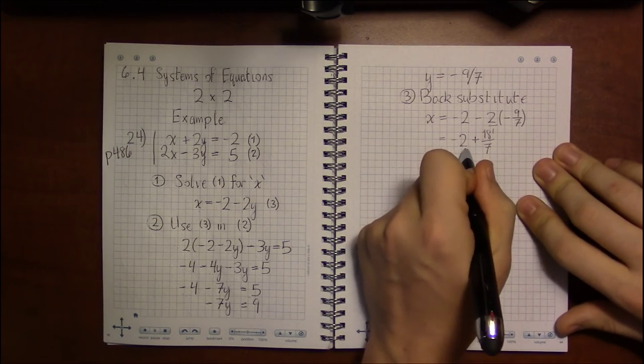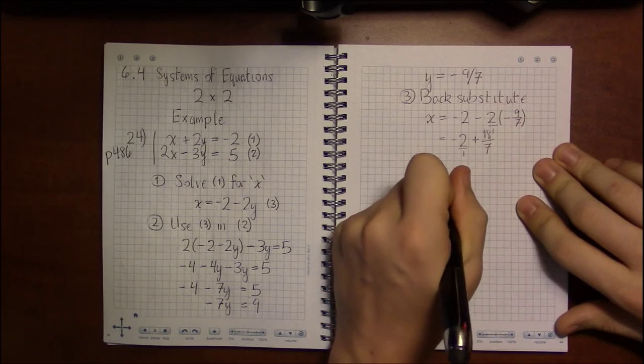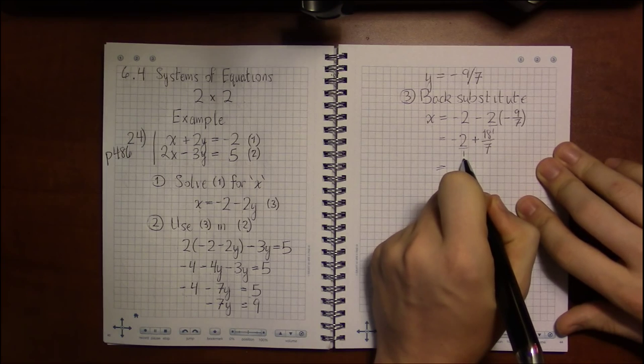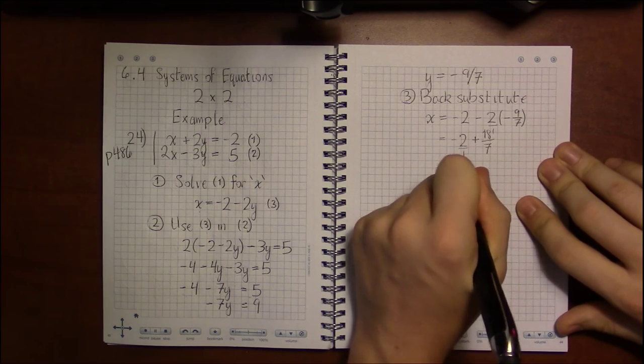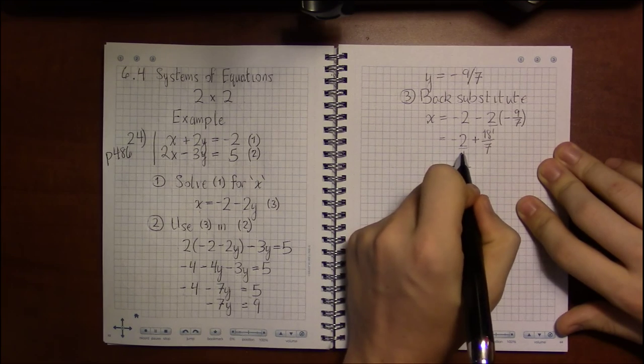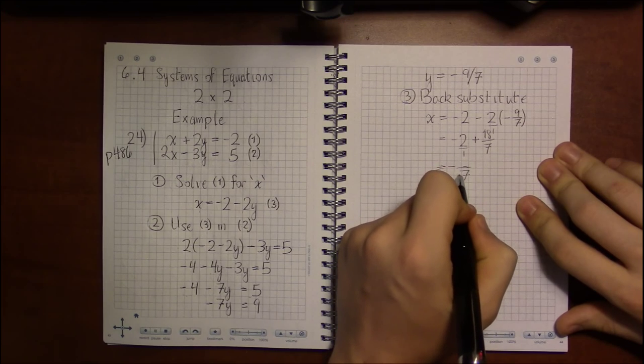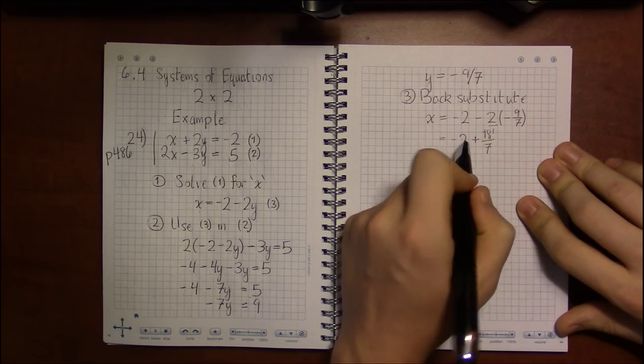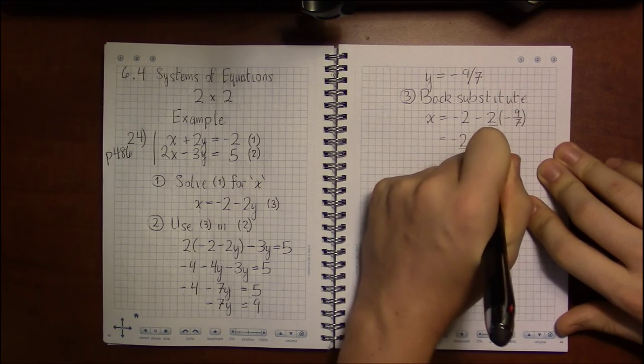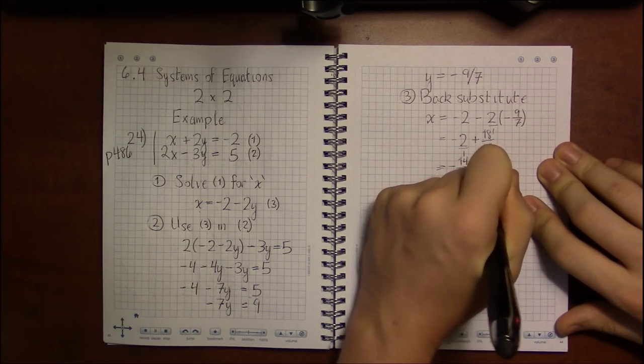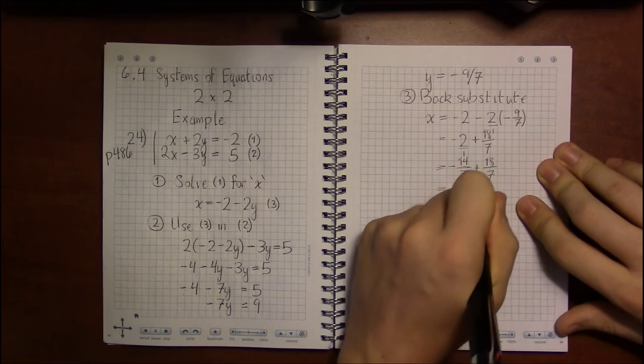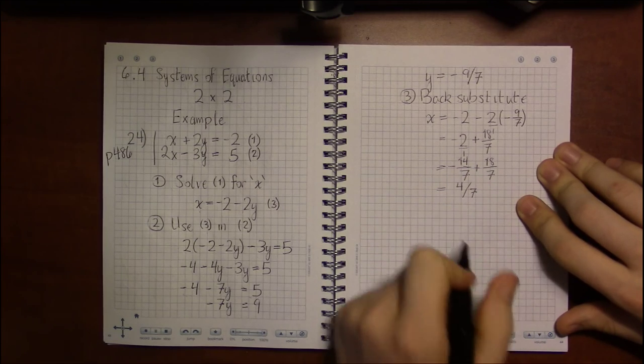So we are going to need common denominators in order to combine these two fractions, and the least common denominator between 1 and 7 is going to be 7. So we would have to multiply top and bottom here by 7. 1 times 7 is 7, 2 times 7 is 14. So minus 14 over 7 plus 18 over 7 is going to be a positive 4 over 7.